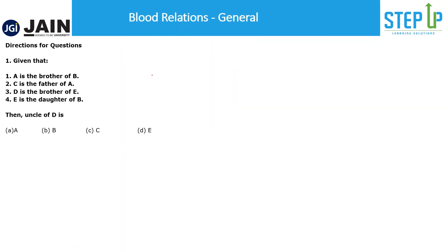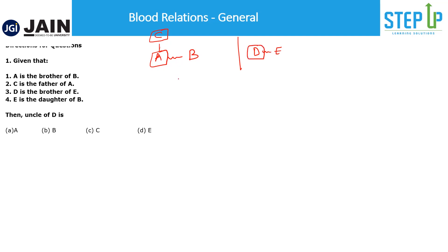The first question: A is the brother of B — so A is male, we draw A and B as siblings. C is the father of A — C goes one generation above A. D is the brother of E — draw D and E as siblings separately. E is the daughter of B — so E and D connect under B. The question asks: who is the uncle of D? D's parent's brother — that is A, since A is the brother of B, who is D's parent.